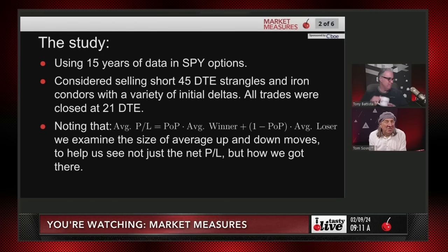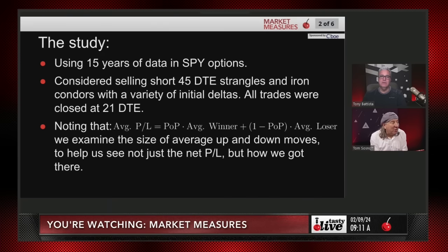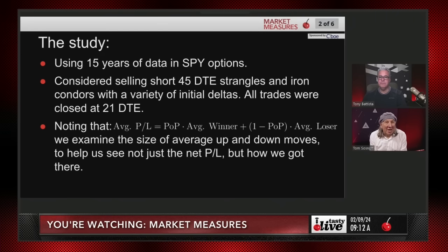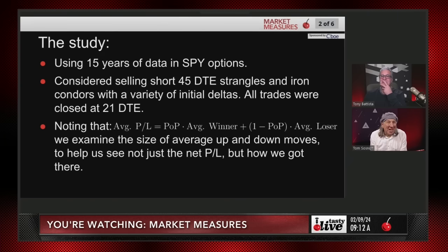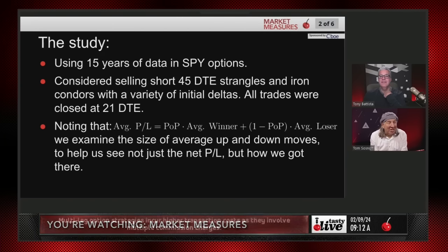So we did a study. We used 15 years worth of data in SPY options, taking us back to 2008. We considered selling short the 45-day strangles and iron condors with a variety of deltas. All the trades were in the SPY. All the trades were closed at 21 DTE. Noting that average P&L equals POP times the average winner — we examined the size of the average up and down moves to help us see not just the net P&L, but how we got there.